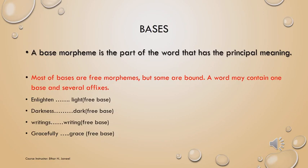The second example is 'darkness.' Darkness consists of two morphemes: dark and ness. Dark is a free morpheme, and ness is a bound morpheme because it cannot stand alone with meaning. But dark can stand alone with meaning, so it is a free morpheme. The base of this word is dark, not ness, because dark carries the most important meaning of the word. Darkness comes from dark, not from ness. So the most important meaning of darkness comes from the morpheme dark, which makes it the base — and it is a free base because dark is a free morpheme.